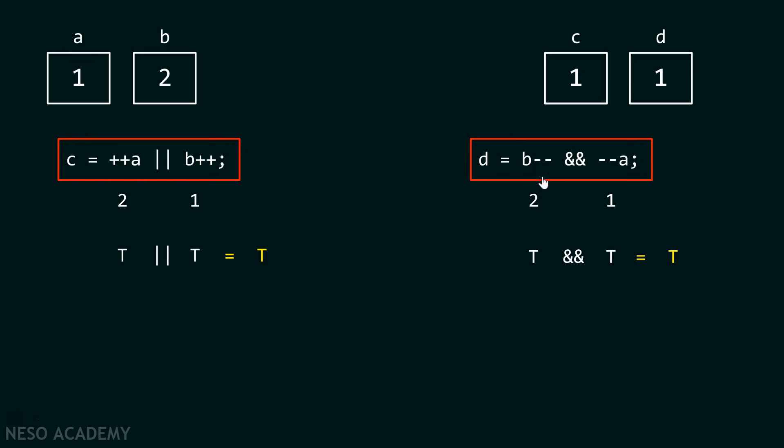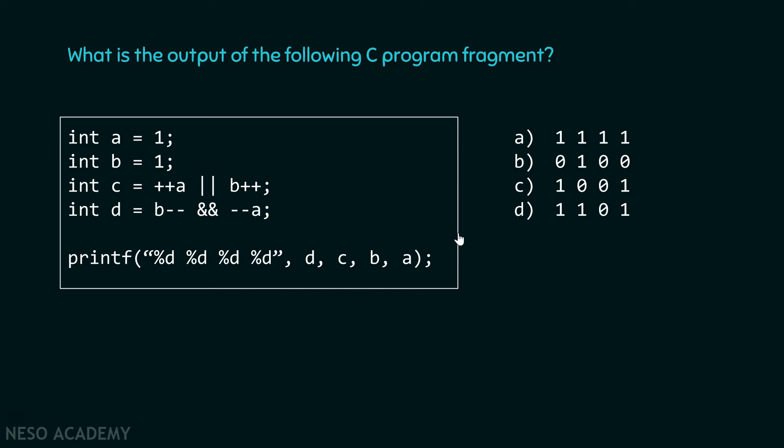Final result of d would be equal to 1. But as we know, this is post-decrement. Therefore, after completion of this expression, this value gets updated to 1. Now, what would this printf function print? It will print 1, 1, 1 and 1. Therefore, the final output of this particular program would be a.